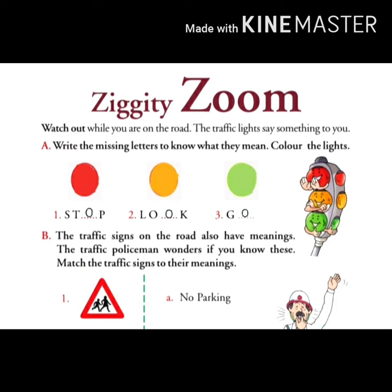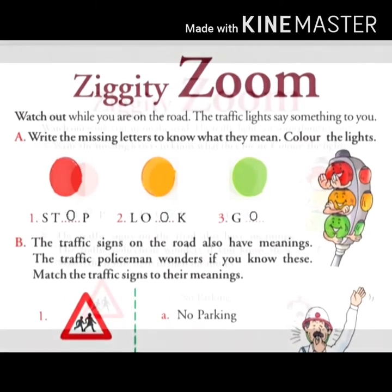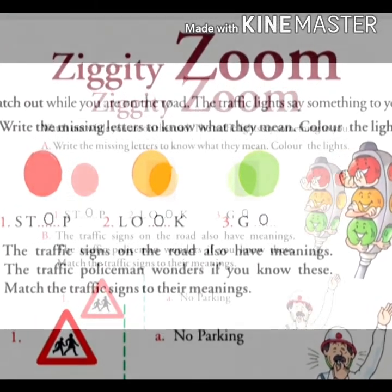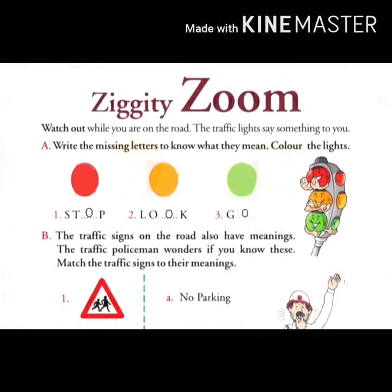The boundary of the second light is yellow, so we will color it in yellow. Yellow color means look — L, O, O, K — so the missing letter is O.